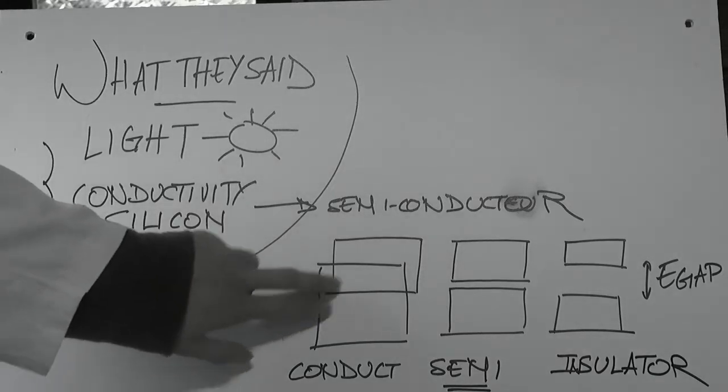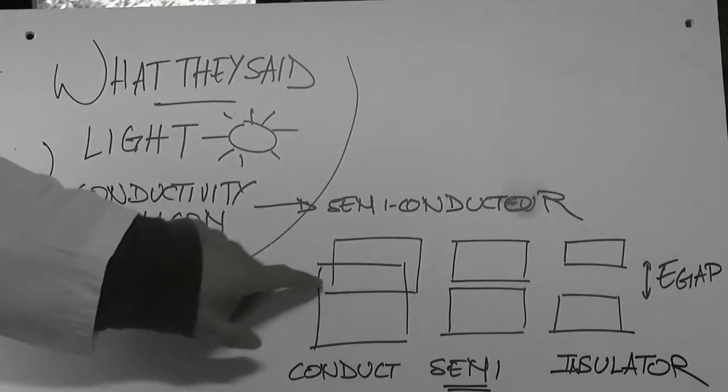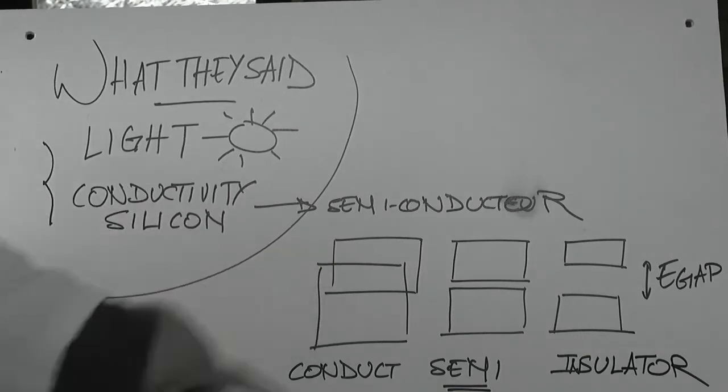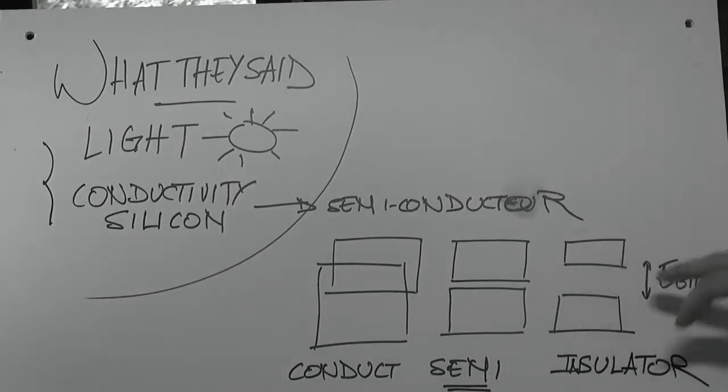We don't need a conductor, whereas the electrons can be either in the conduction band or in the valence band. Yeah, and however, we never need an insulator because the energy gap is too wide.